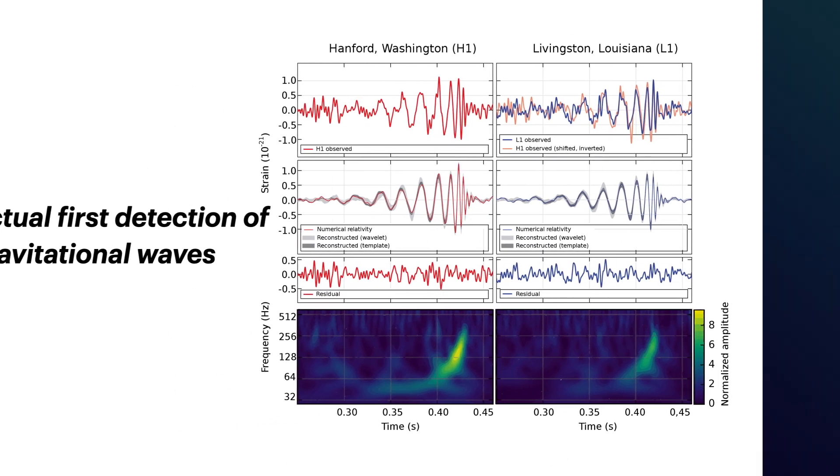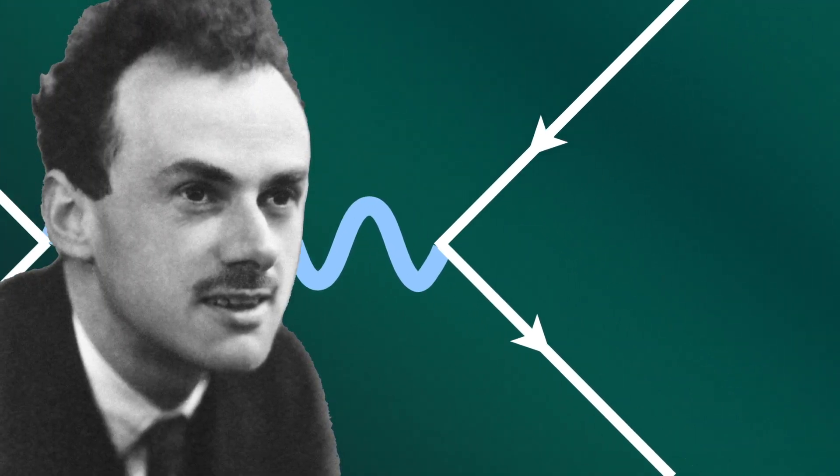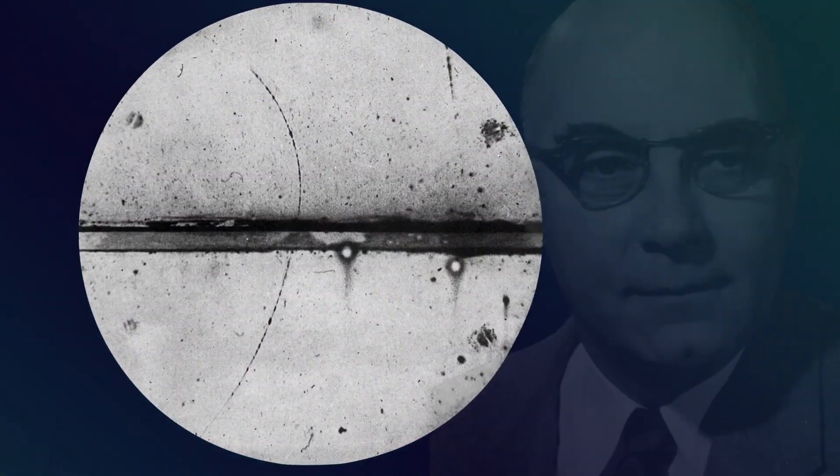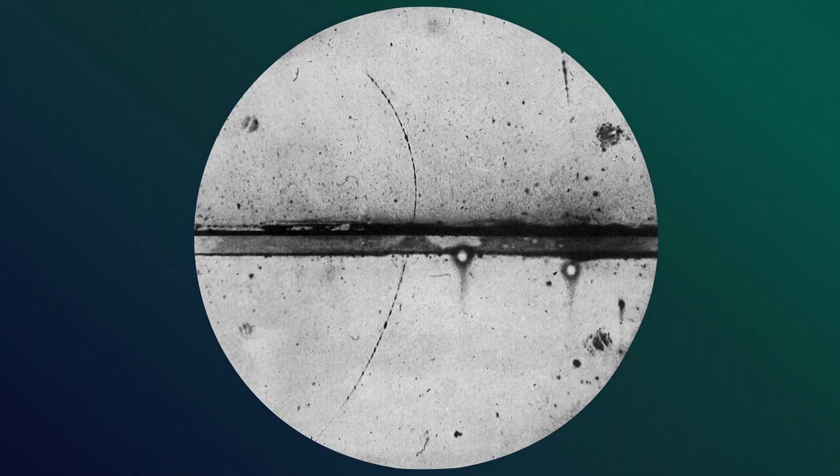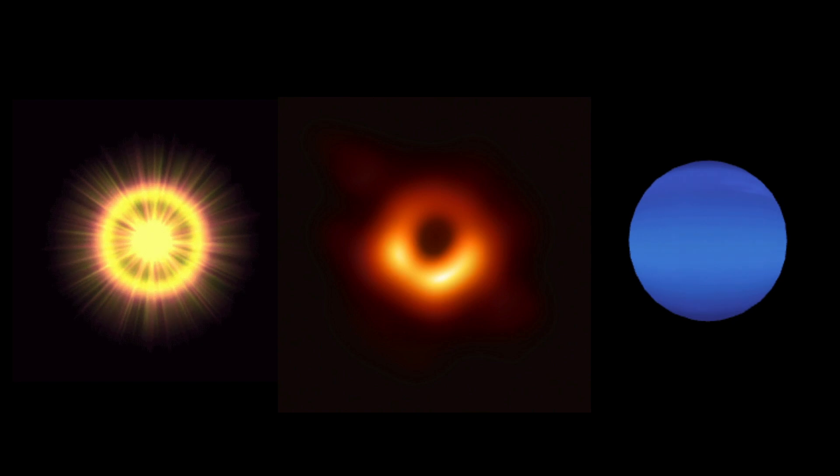The existence of antimatter was first predicted by Paul Dirac in 1928 with his Dirac equation, which combined quantum mechanics and special relativity. Experimental confirmation came in 1932 when Carl Anderson discovered the positron, an antiparticle of the electron. Other findings, like the Higgs boson, black holes and even the planet Neptune, were all first predicted mathematically and physically found decades later.